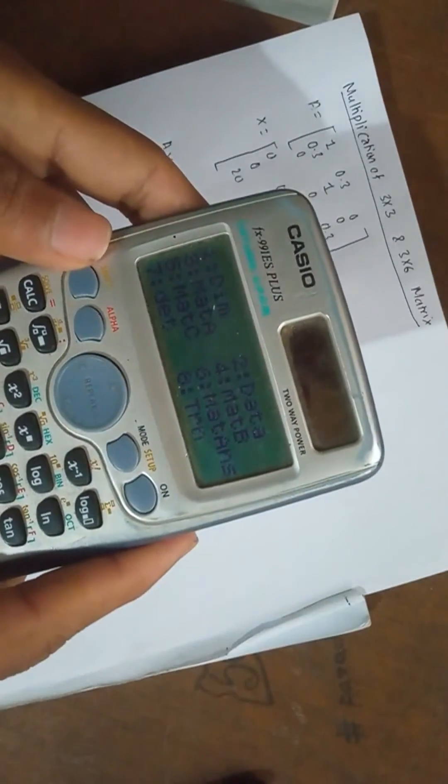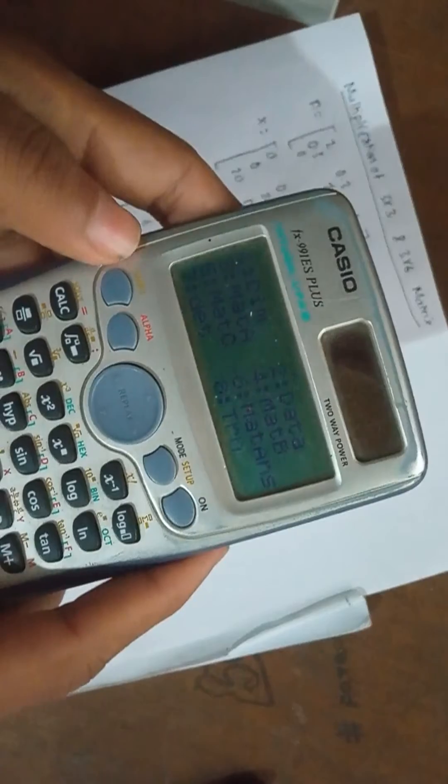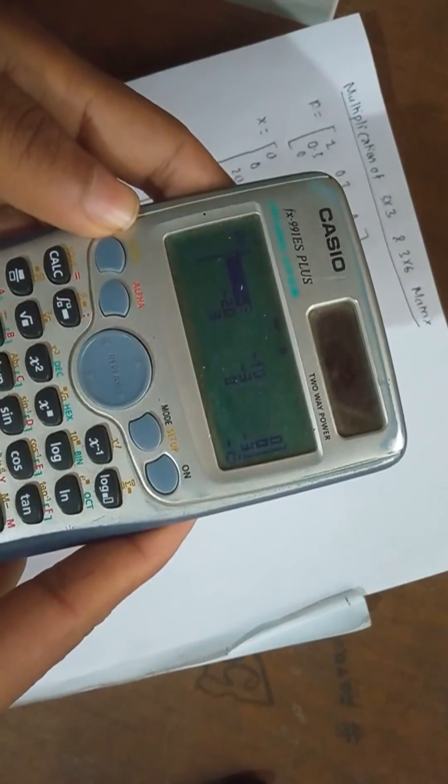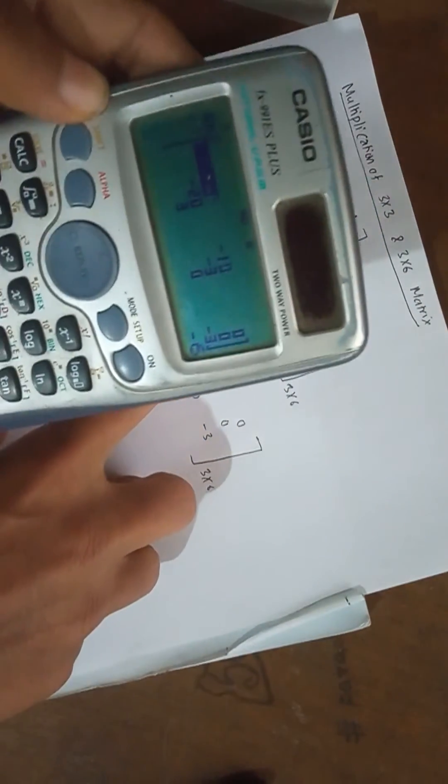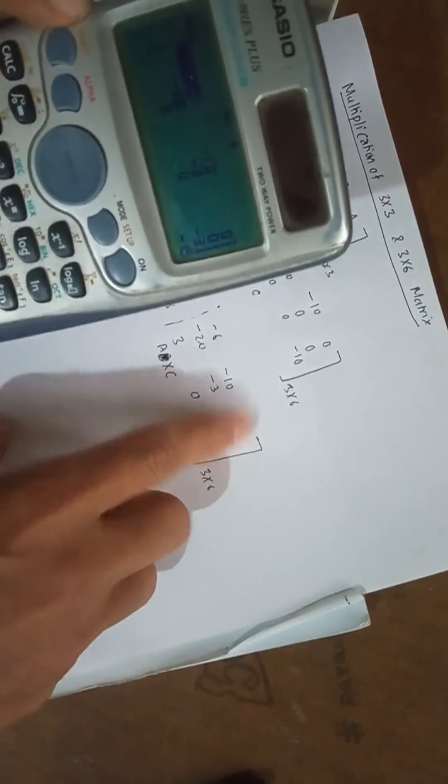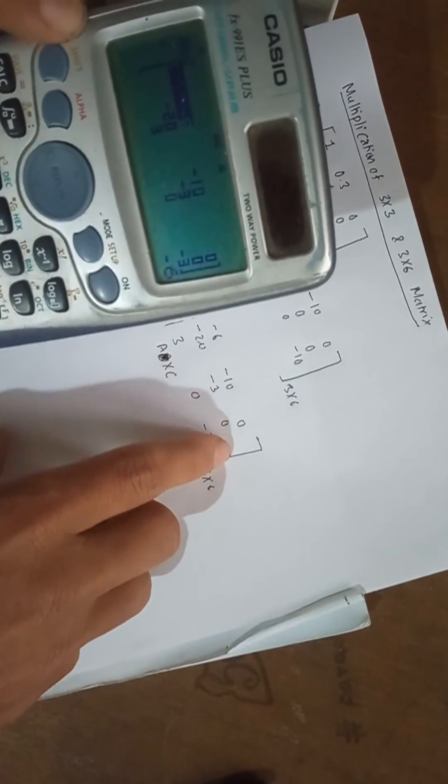In a similar way, for A times C, the result is: 0, minus 6, minus 10, 0, minus 20, minus 3, 0, 3, 0, minus 3.